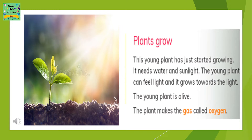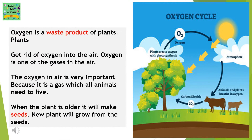The plant makes the gas called oxygen. Oxygen is a waste product of plants, and plants get rid of oxygen into the air. Oxygen is one of the gases in the air, and it is very important because it is the gas which all animals need to live.